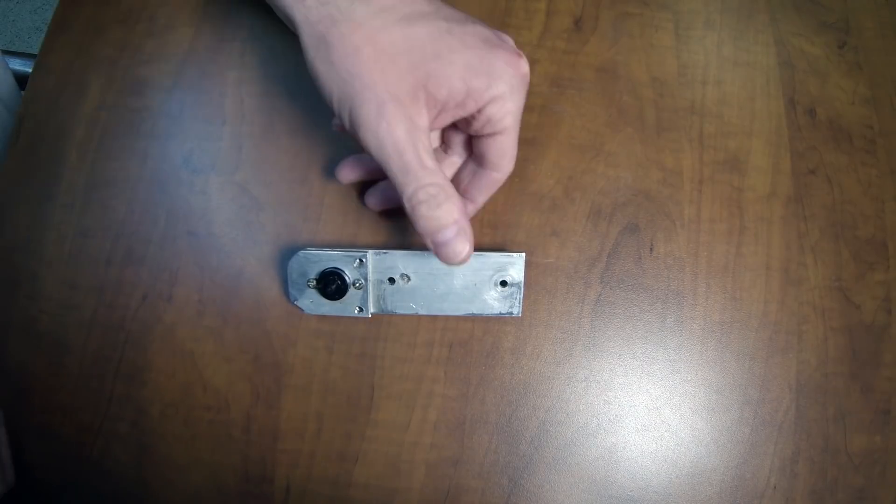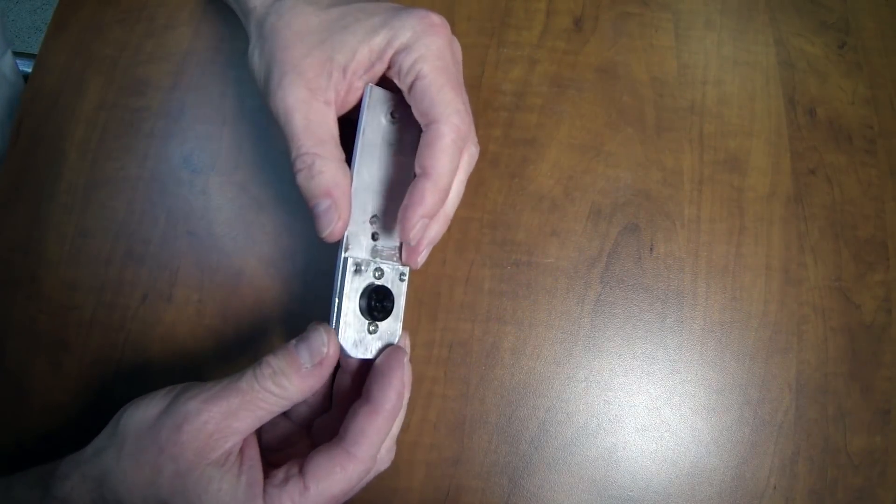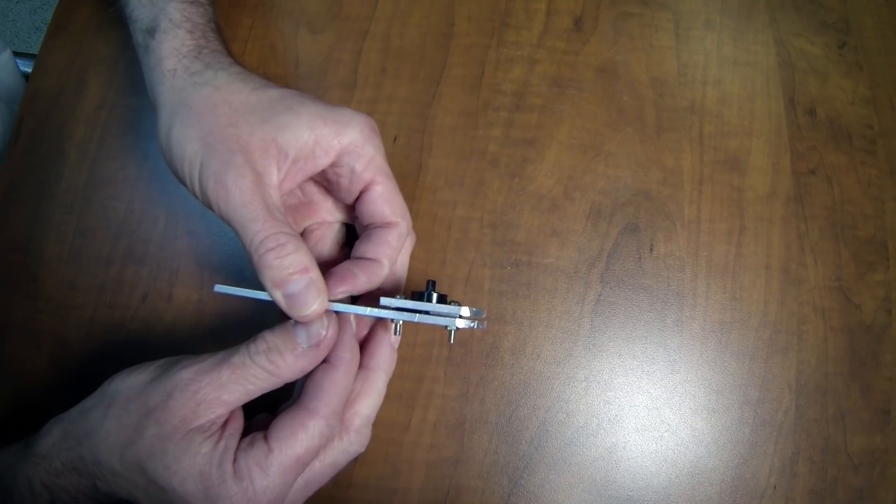Okay so I've got this bolted together and that just sandwiches the rotary damper in there. Just some small bolts.